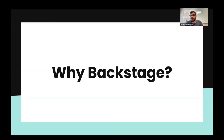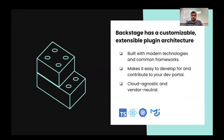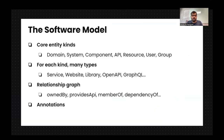Instead of switching between GCP, Grafana dashboards, and service logs, everything is available in a single place. Why Backstage? Because it is open source — the biggest selling point — and you can customize your own Backstage instance. Backstage has an extensible plugin architecture, is built on modern technologies and common frameworks like TypeScript and React, making it easy to develop for and contribute to. It is also cloud agnostic and vendor neutral.